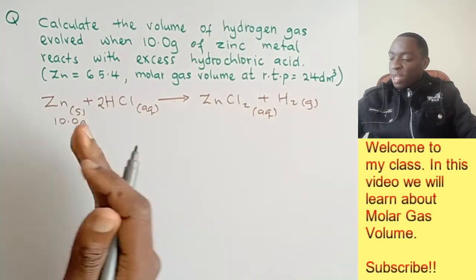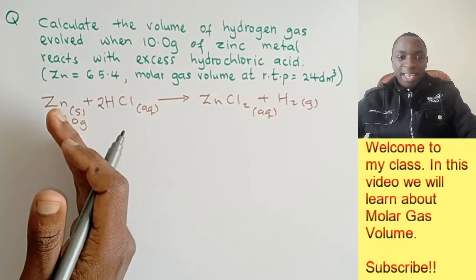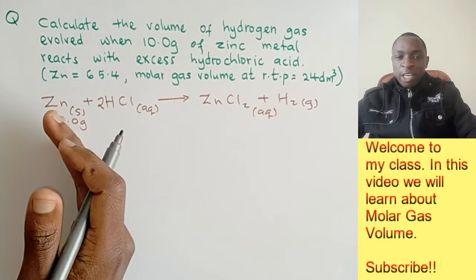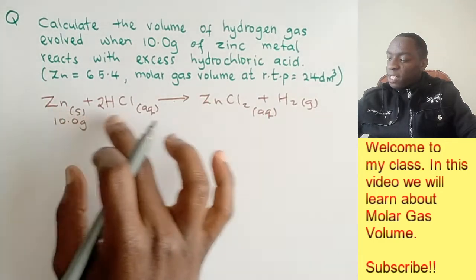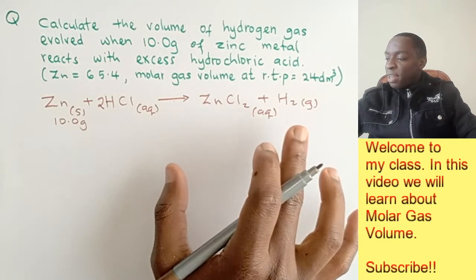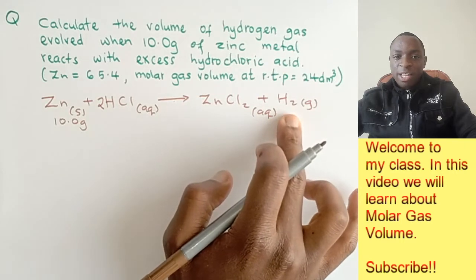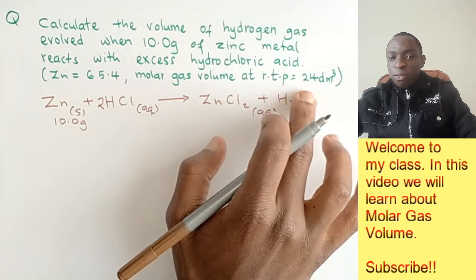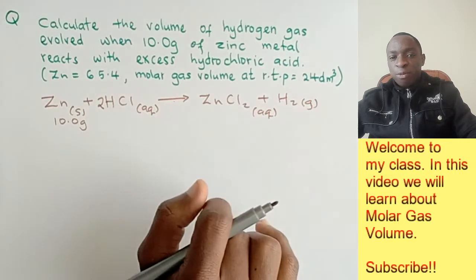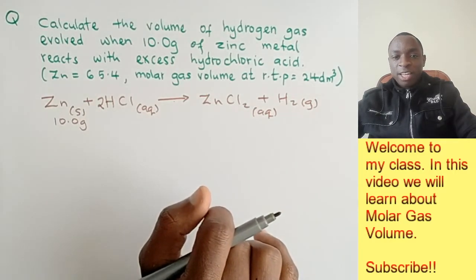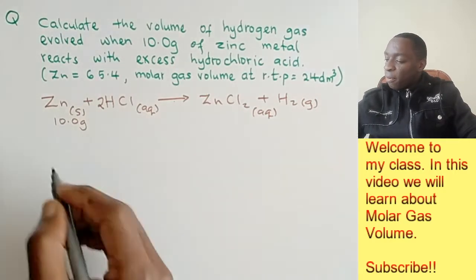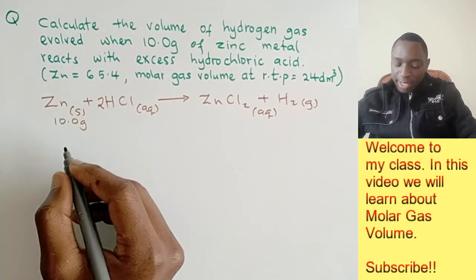We're supposed to calculate the number of moles of zinc. Then using the mole ratio from this equation, we find the number of moles of hydrogen. Then using the molar gas volume, we find the volume of hydrogen gas.